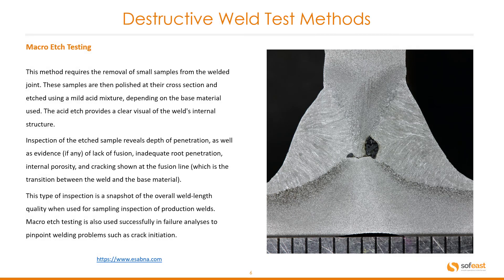Macro etch testing requires the removal of small samples from the welded joint. These samples are then polished at the cross section and etched using a mild acid mixture, depending on the base material used. The acid etch provides a clear visual of the weld's internal structure. Inspection of the etched sample reveals depth of penetration, as well as evidence of lack of fusion, inadequate root penetration, internal porosity, and cracking shown at the fusion line, which is the transition between the weld and the base material.